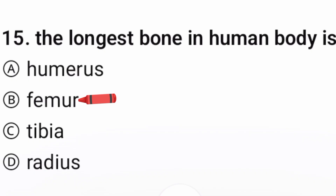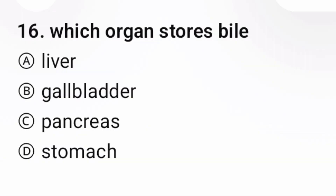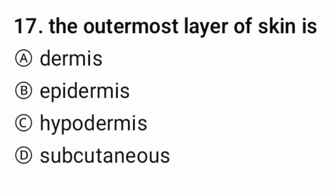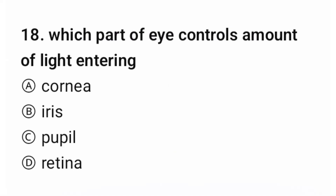Question 16: Which organ stores bile? The correct option is B. Question 17: The outermost layer of skin is — the correct option is B. Question 18: Which part of the eye controls the amount of light entering? The correct option is B.